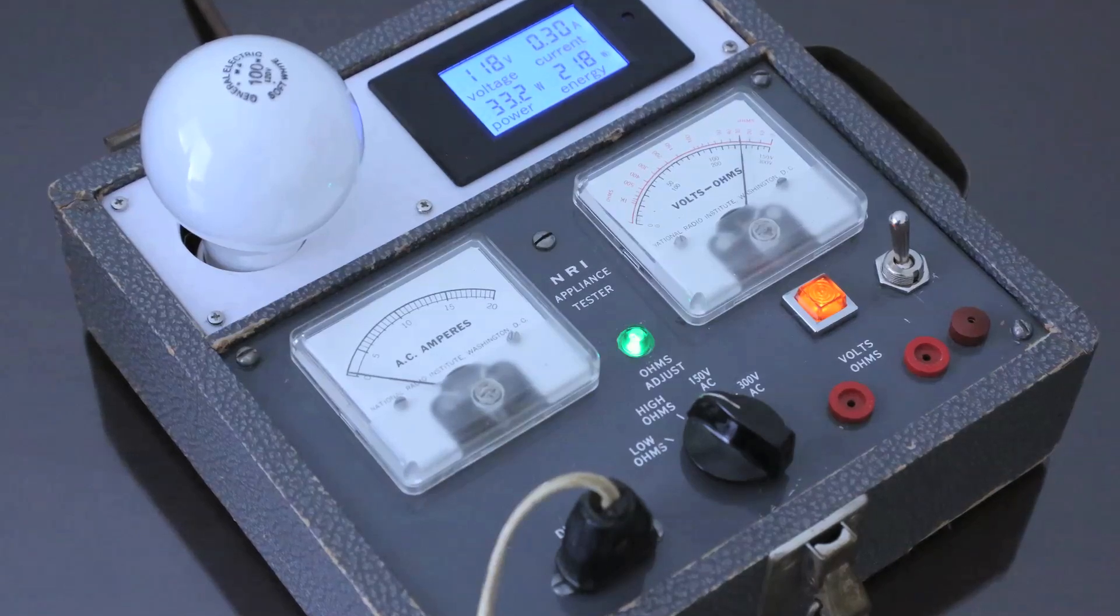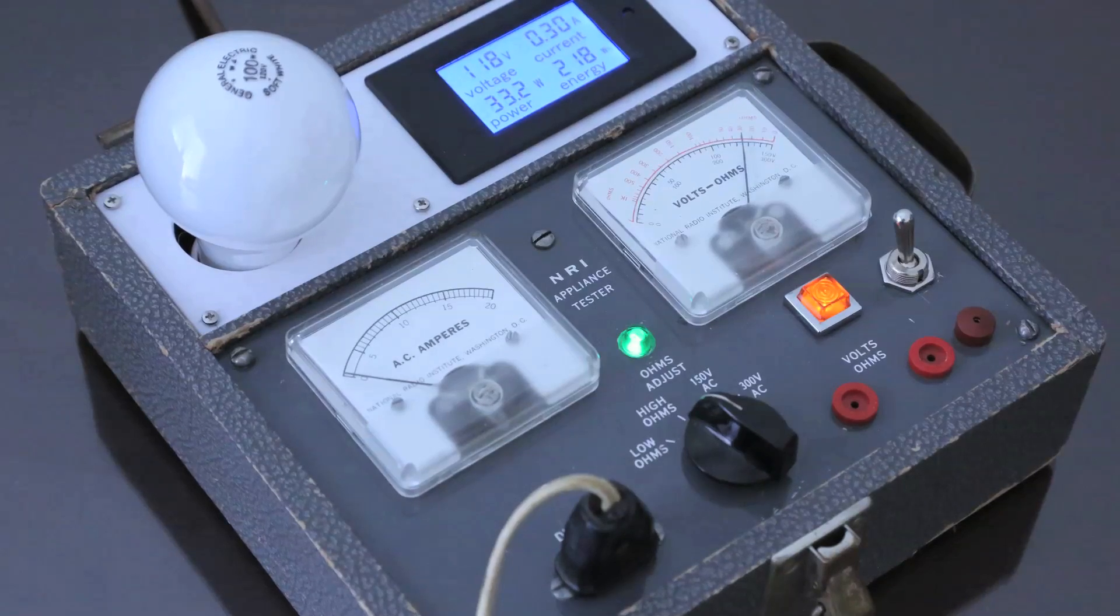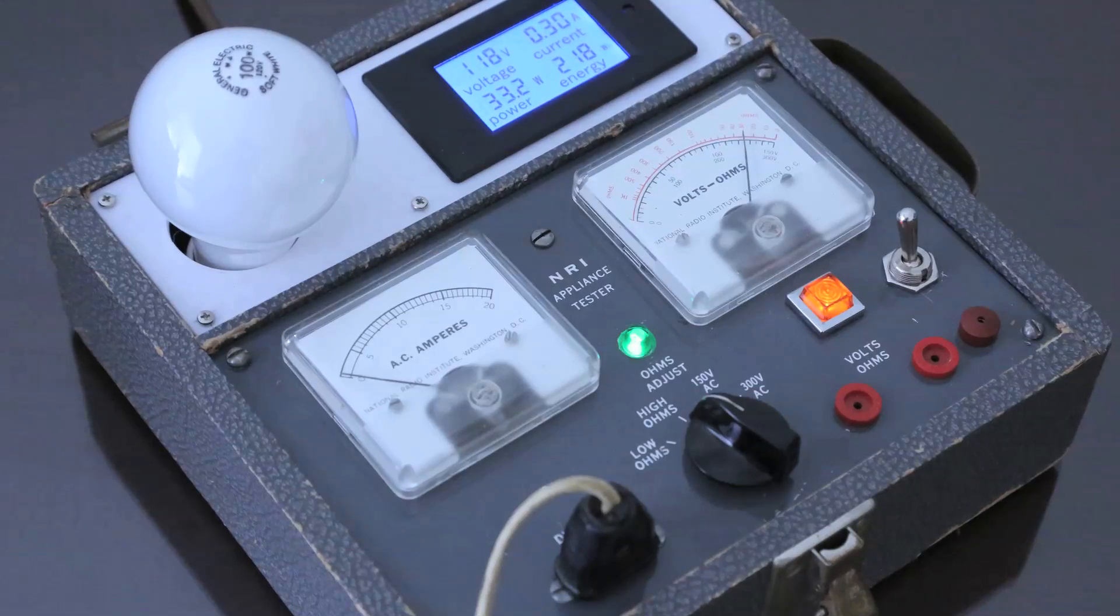The Dim Bulb Tester lets you try out your equipment, for instance old tube radio, under safe conditions and see whether it has a short circuit.